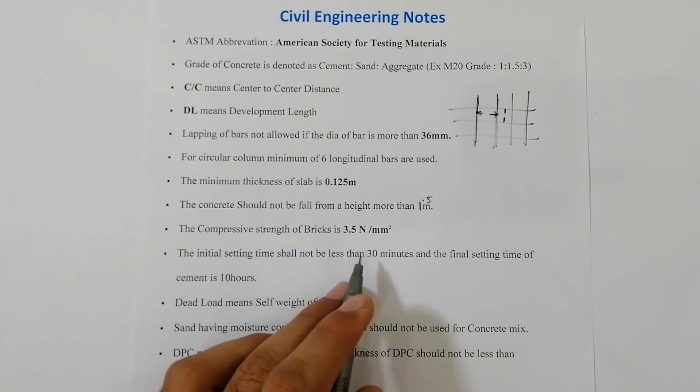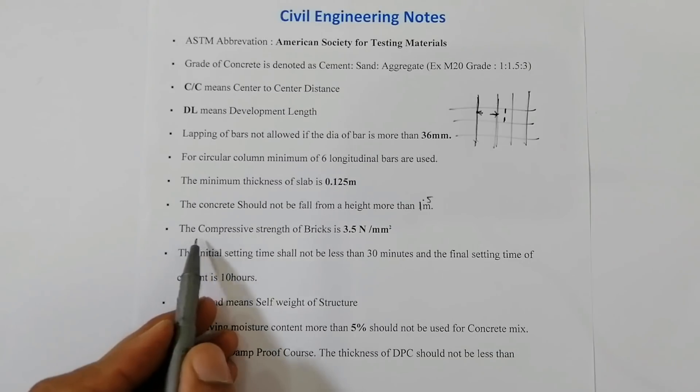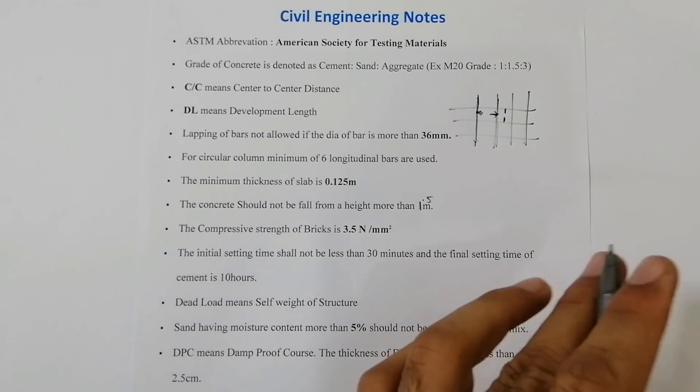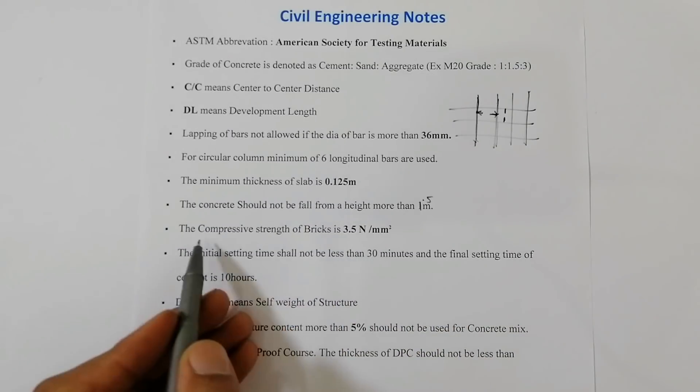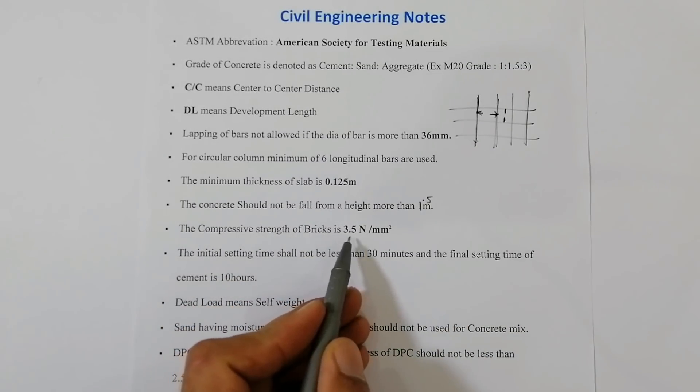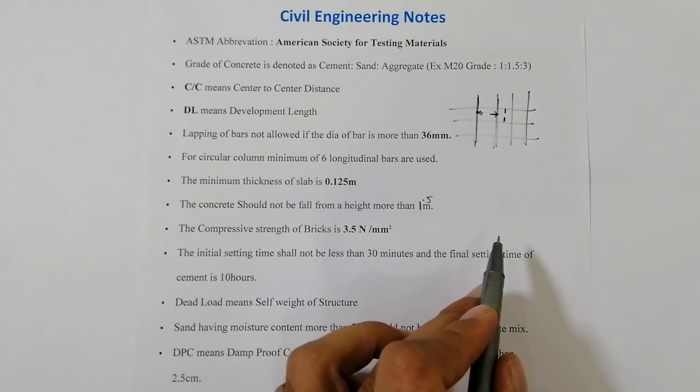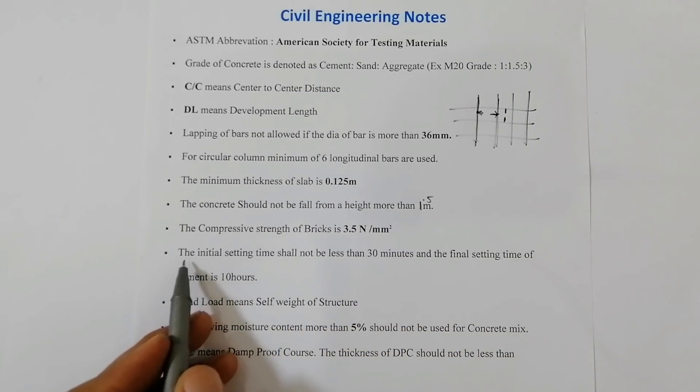Now here, the other one is the compressive strength of brick - first class brick which we use for masonry has compressive strength of 3.5 Newton per mm square for first class brick.